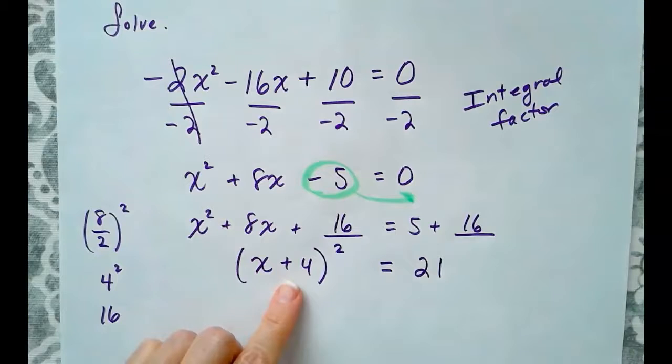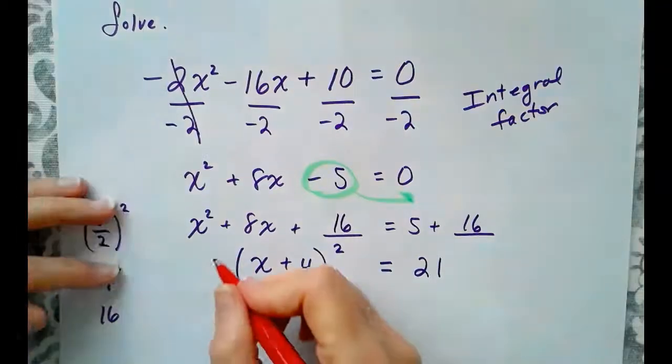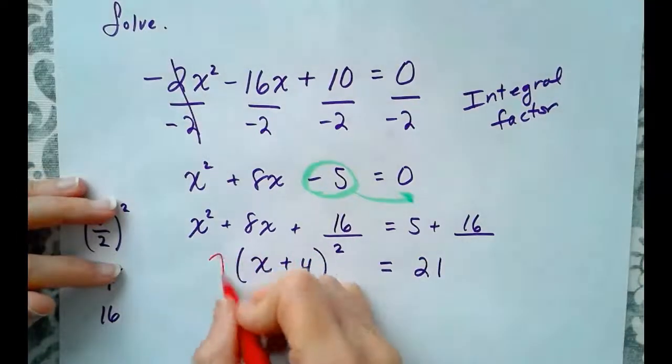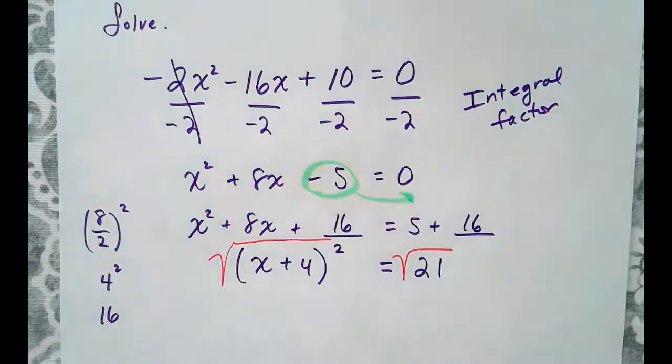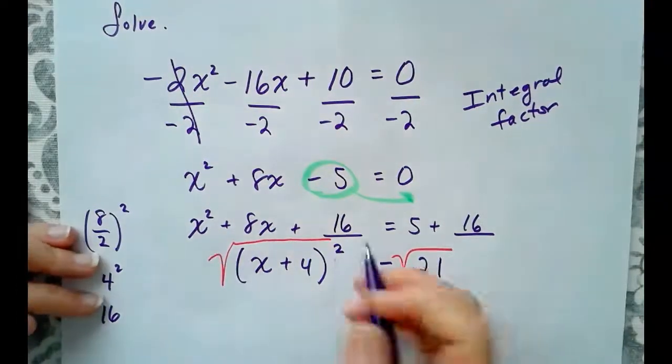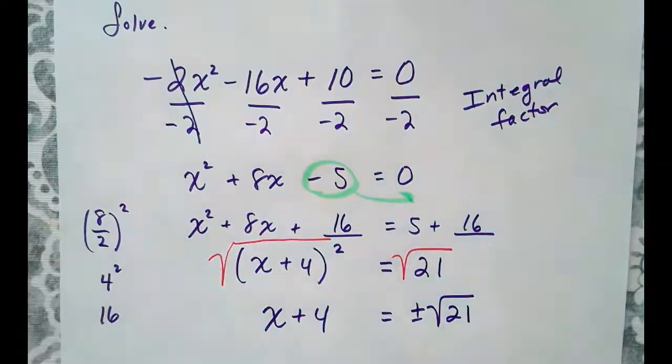So, once again, our squared expression is isolated on the left-hand side of the equation. Now, we can undo the square and solve for x by taking the square root of both sides. So, the square root undoes the square. That's x + 4. The square root of 21 will not simplify. So, we'll leave it plus or minus the square root of 21.